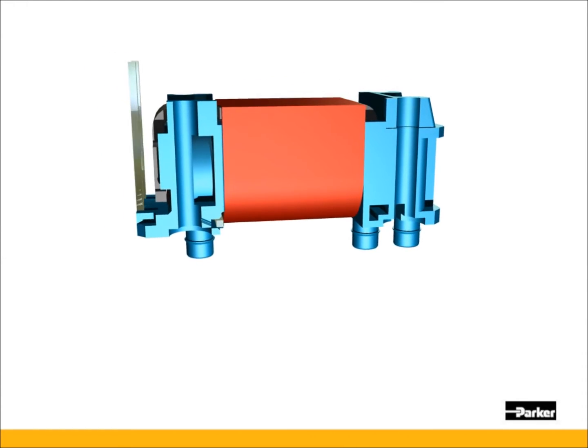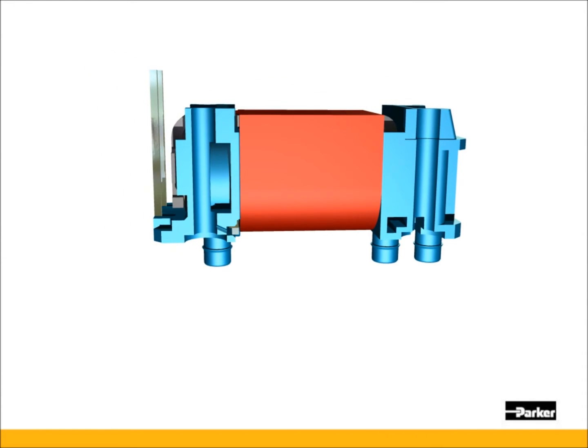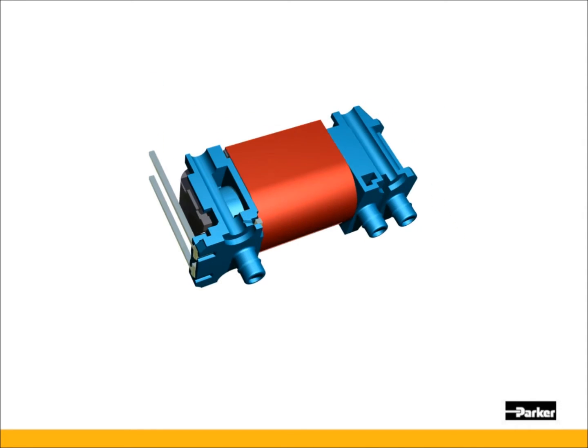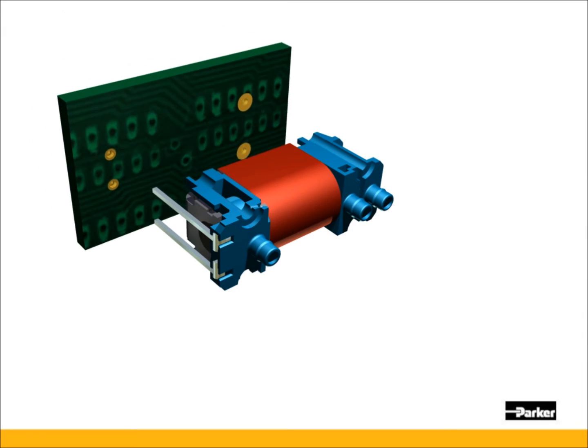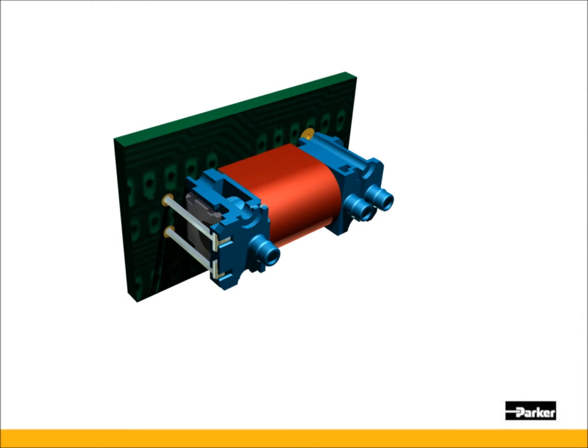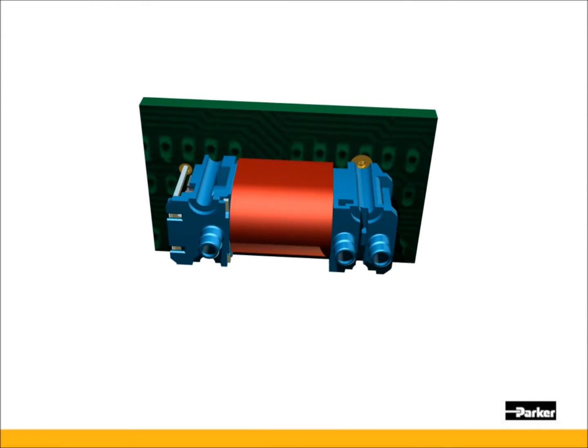When connecting to a printed circuit board, or PCB, the X-Valve has electrical pins that extend past the profile of the valve. This allows for an electrical connection directly into plated through holes on the PCB. This will also serve as part of the mechanical connection.